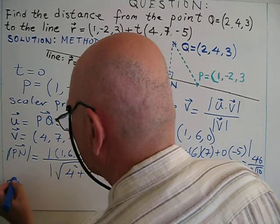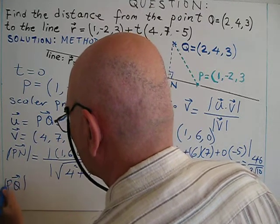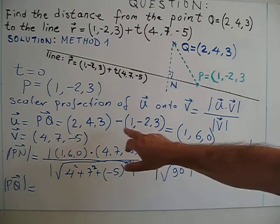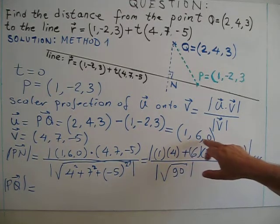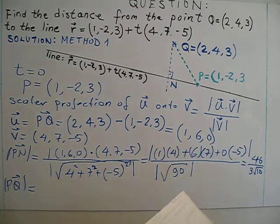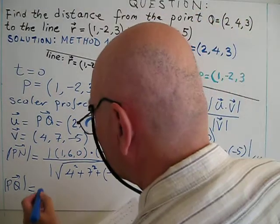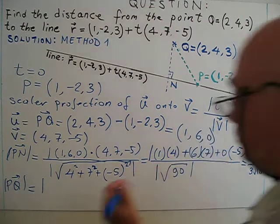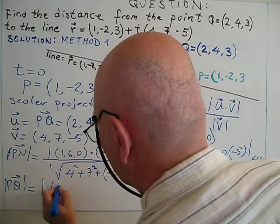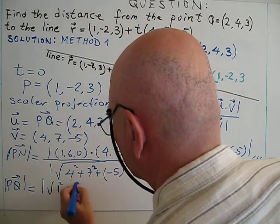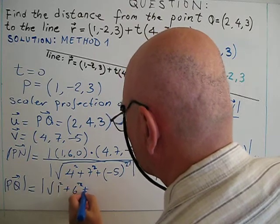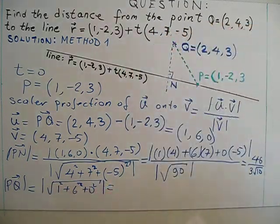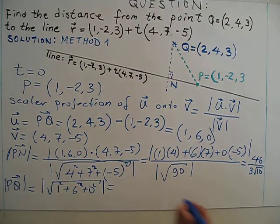PQ, magnitude of PQ will be - so PQ we know (1, 6, 0), this is the vector - so magnitude will be 1 squared plus 6 squared plus 0 squared, square root. 1 squared plus 6 squared plus 0 squared, square root. So root 37.